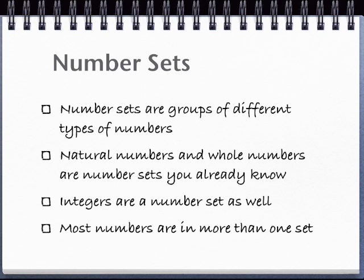In my video about natural numbers versus whole numbers, I mentioned number sets. Number sets are groups of different types of numbers. Natural numbers and whole numbers are two examples of number sets. Integers are another number set.